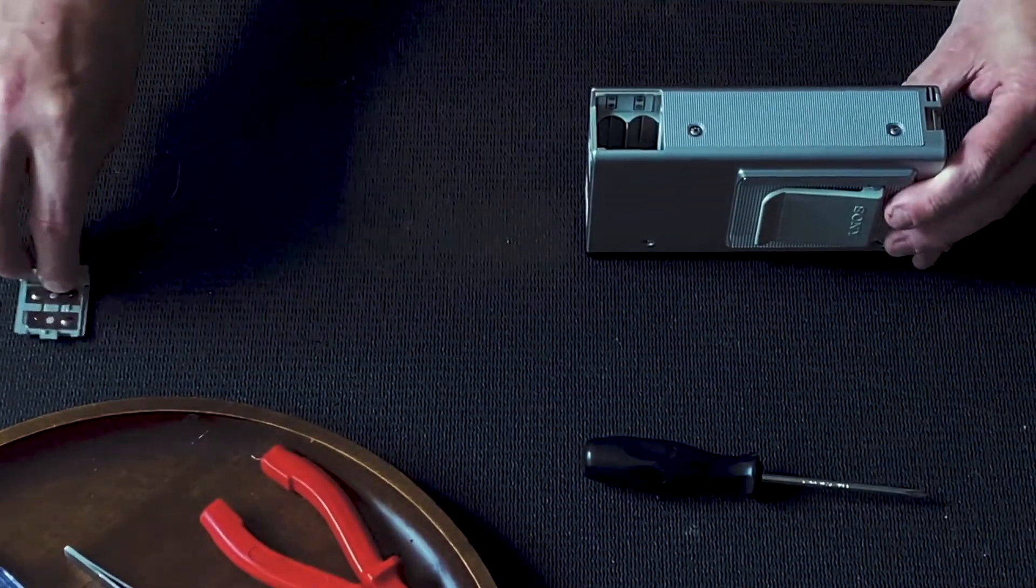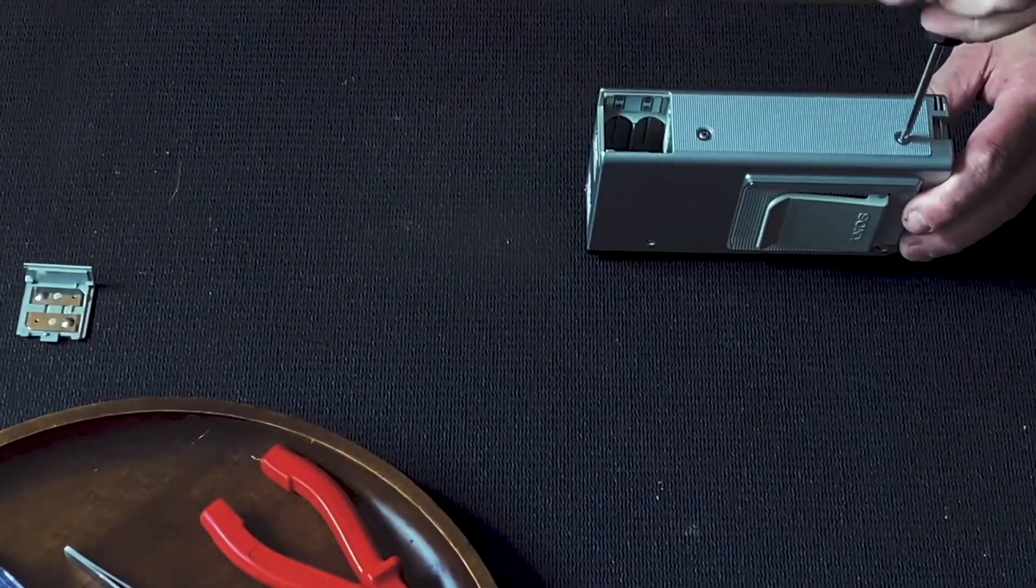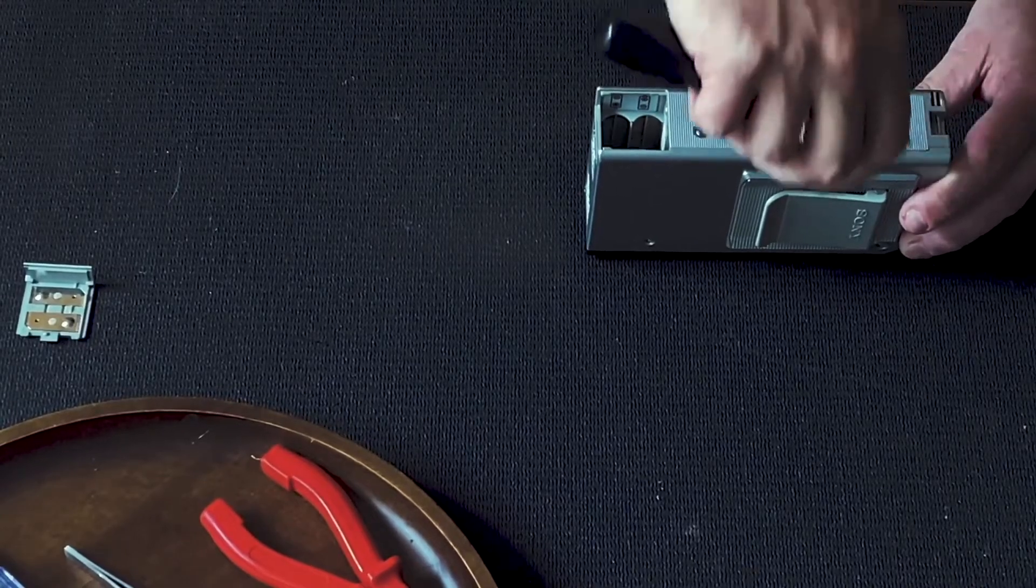Step 1: Remove the screws. There are two on the back, two on the bottom, and two inside the cassette compartment. Keep these screws safe as we'll need them later.